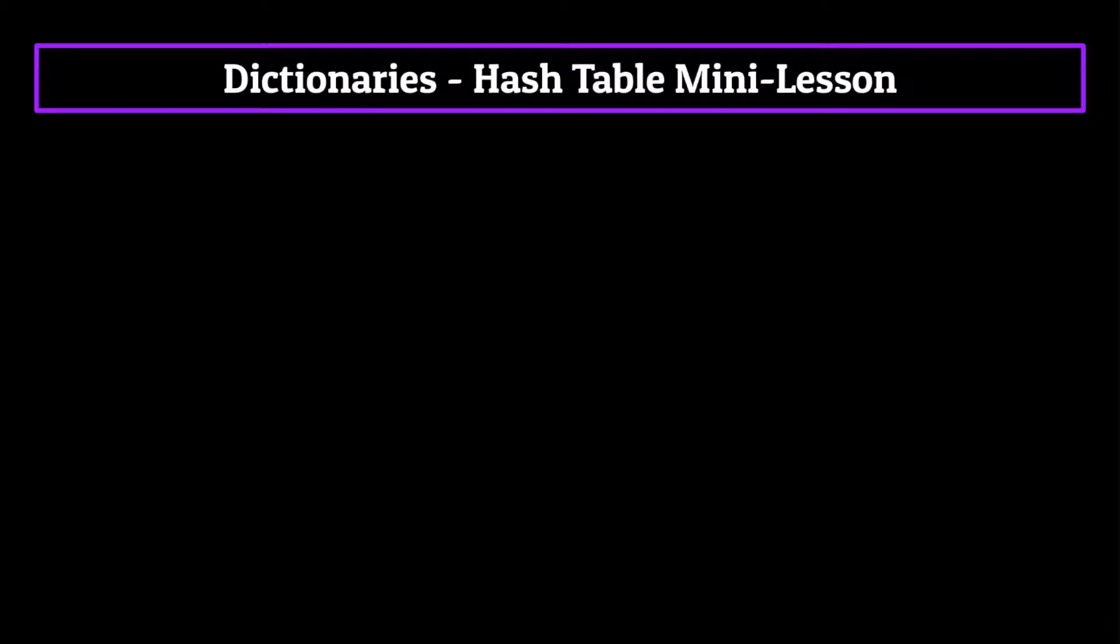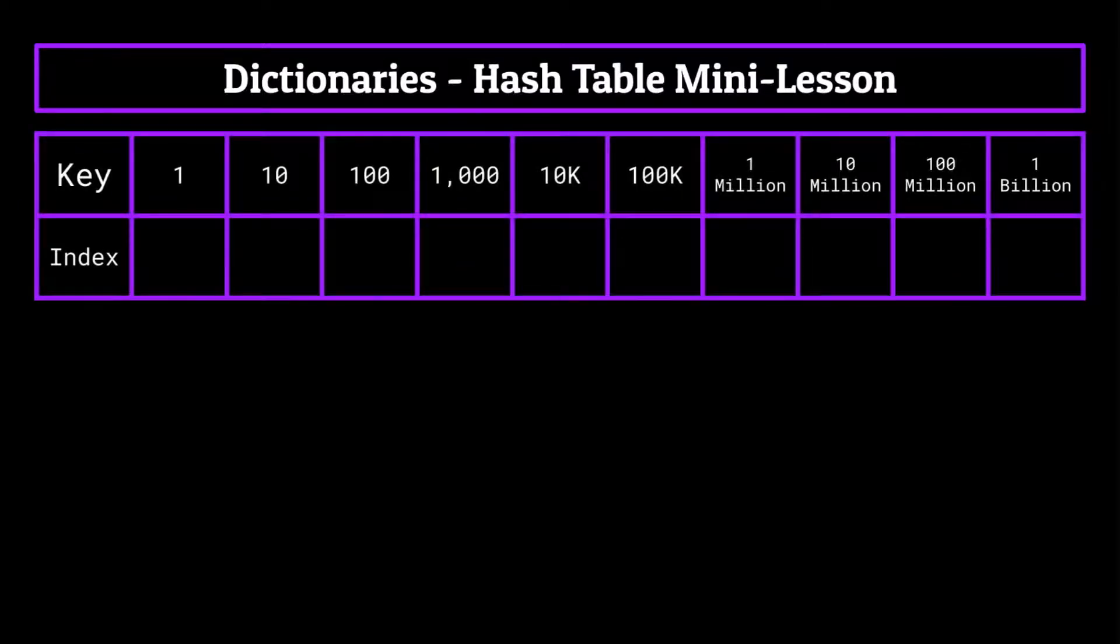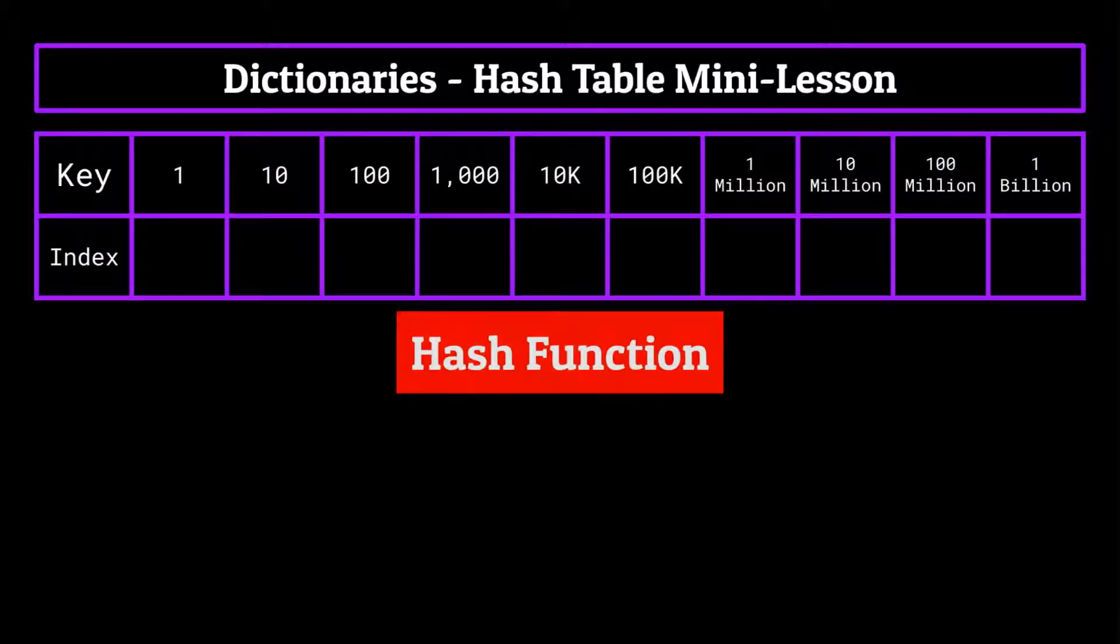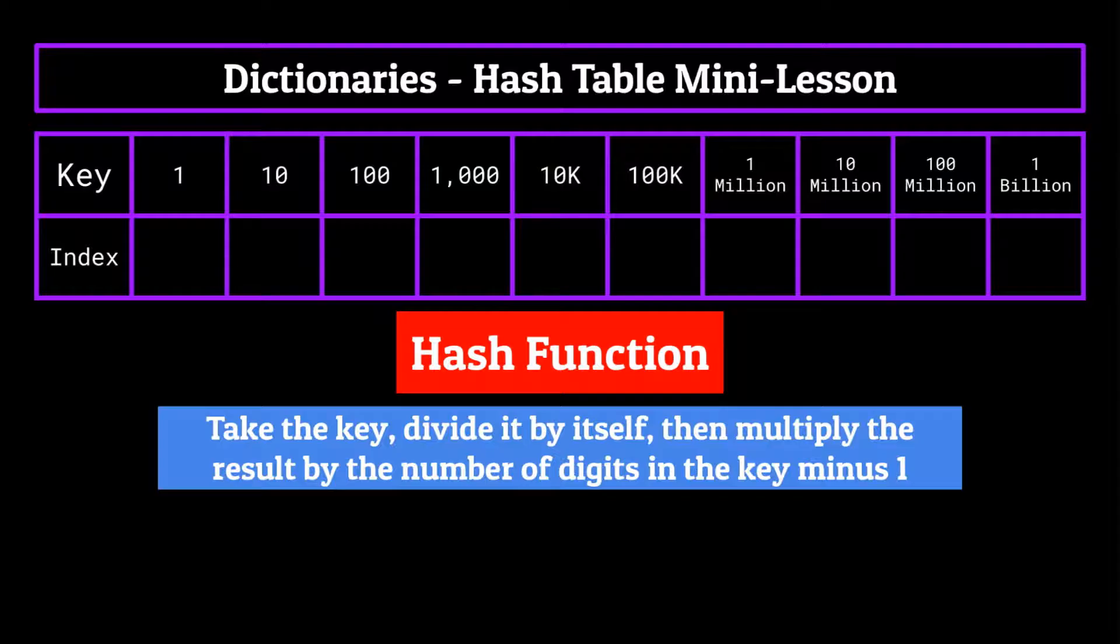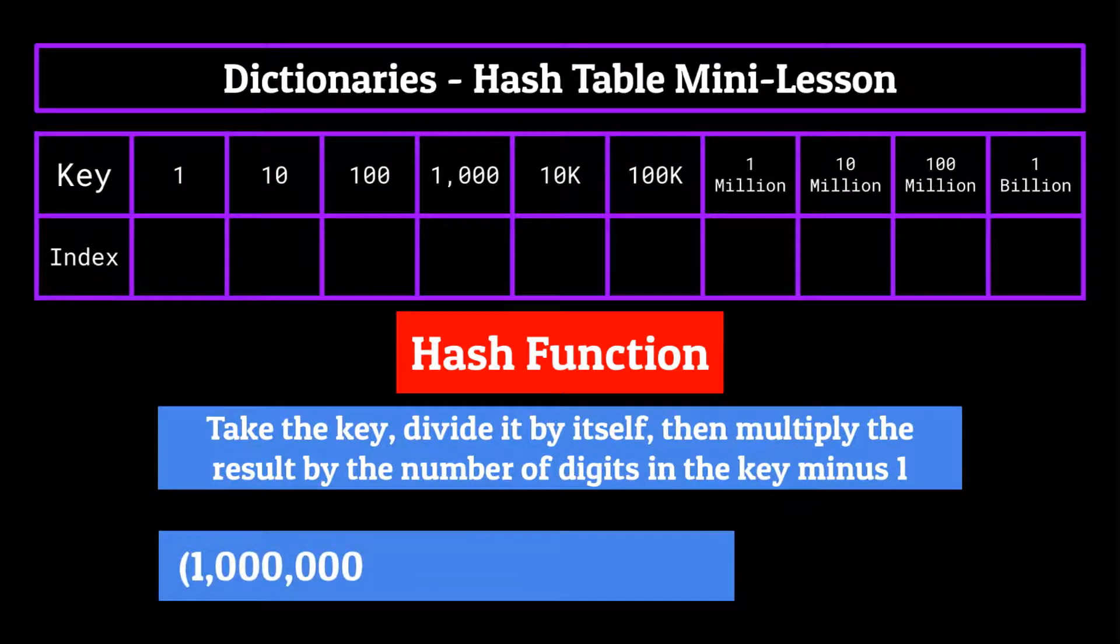So with all that being said, let's say we have a dictionary which contains keys which are integers from one to a billion by a factor of 10. So the keys would be 1, 10, 100, 1000, 10,000, 100,000, and so on. A good hash function for this might be to take the number divided by itself and then multiplied by the number of digits in that number minus one. So to find out where to put the key 1 million, we take a million divided by itself, which yields one, and then multiply that by the number of digits in the integer minus one, in this case, six.